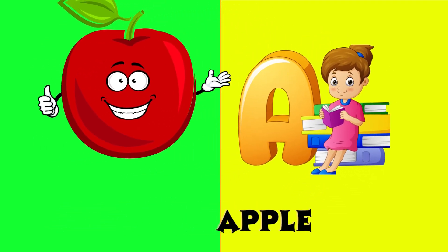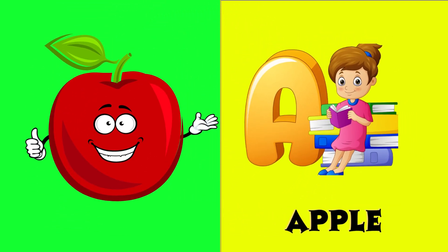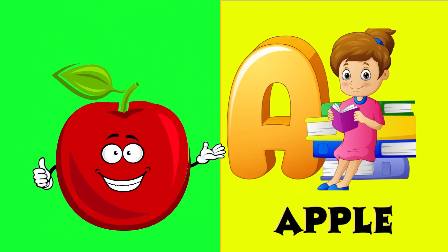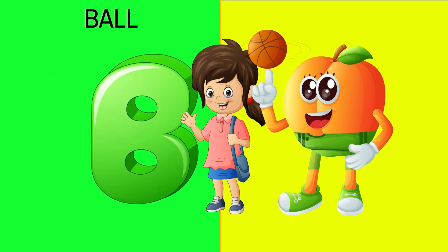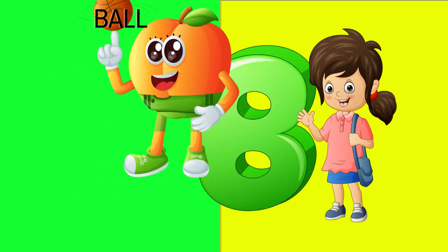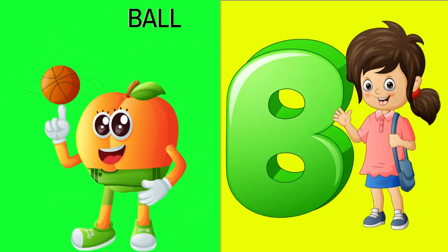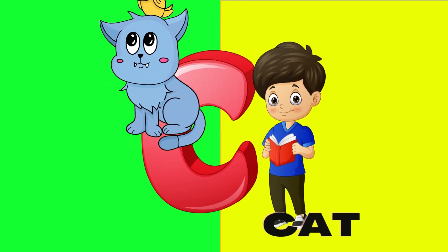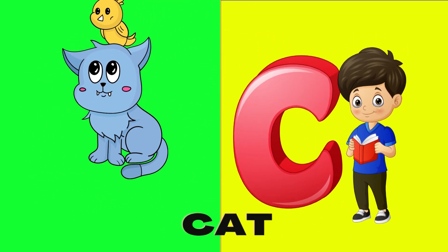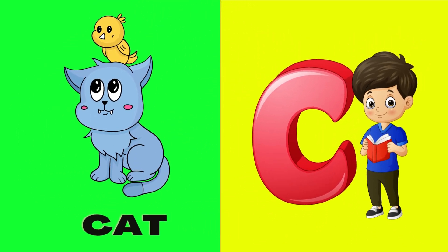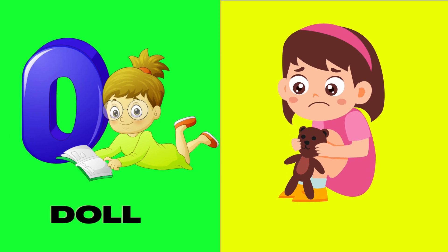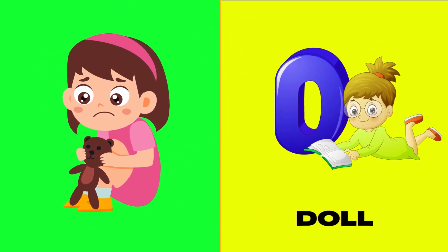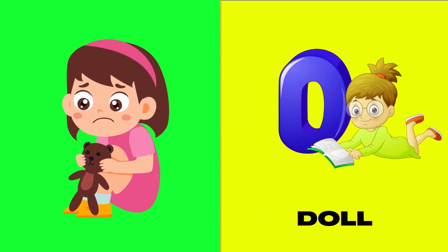A is for apple, a-a-apple. B is for ball, b-b-ball. C is for cat, c-c-cat. D is for doll, d-d-doll.